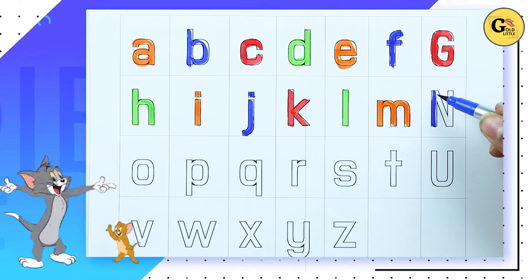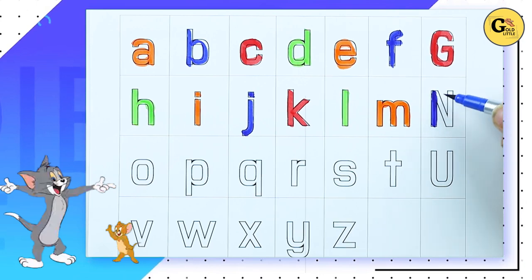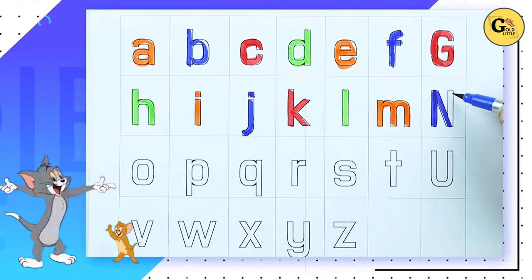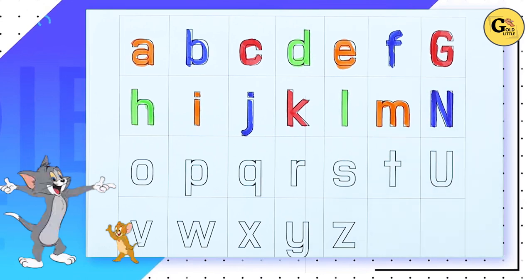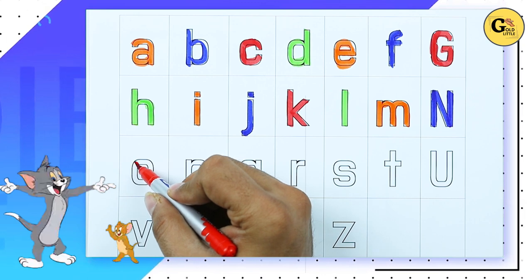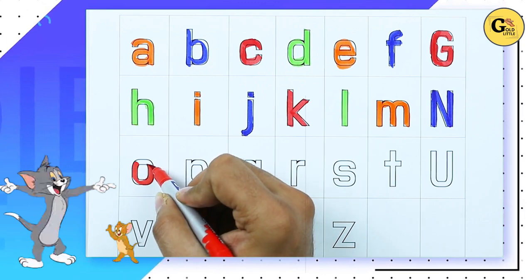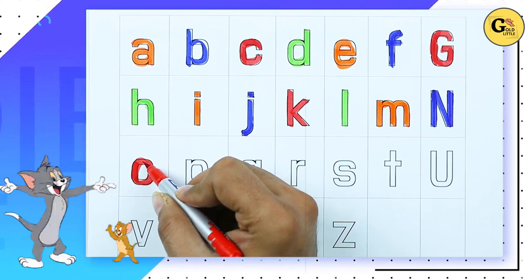N. It's N. N for nest. It's N. O. It's small O. O for octopus.